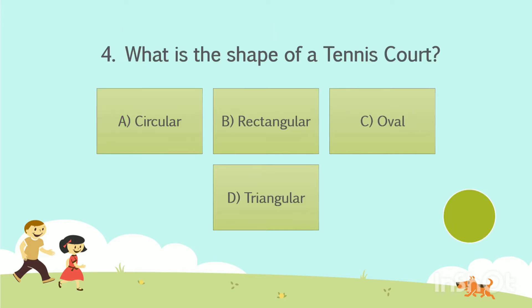Question No. 4. What is the shape of a tennis court? Option A: Circular. Option B: Rectangular. Option C: Oval. Option D: Triangular. Your time starts now. The answer is Option B: Rectangular.